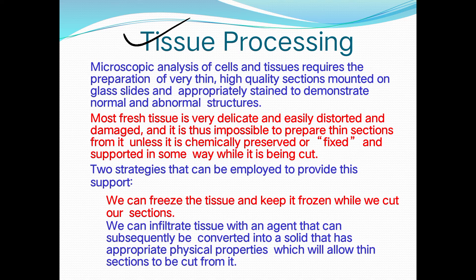Microscopic analysis of cells and tissue requires preparation of very thin sections — 4 to 5 microns thick — mounted on a glass slide and appropriately stained to demonstrate normal and abnormal structure. Most fresh tissue is very delicate and easily distorted or damaged, so it must be chemically preserved and supported while being cut.